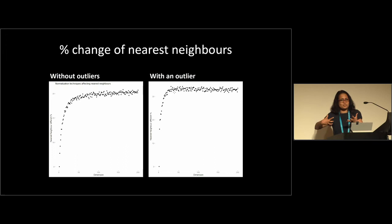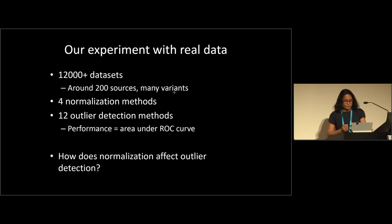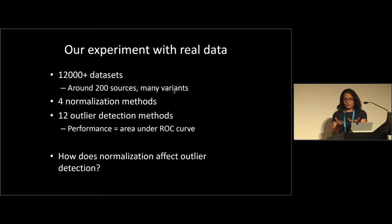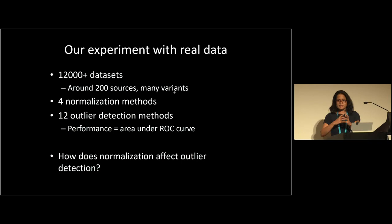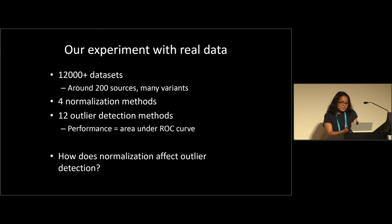For our experiment with real data, we have more than about 12,000 datasets derived from approximately 200 source datasets. We take classification datasets, downsample in different ways, and convert categorical attributes to numerical attributes in different ways, generating about 12,000 variants. We use four normalization methods and 12 outlier detection methods, measuring performance as area under the ROC curve. The key question is: how does normalization affect outlier detection?